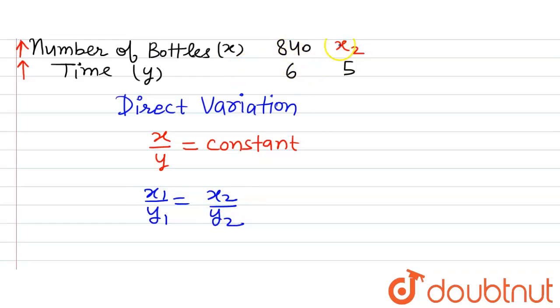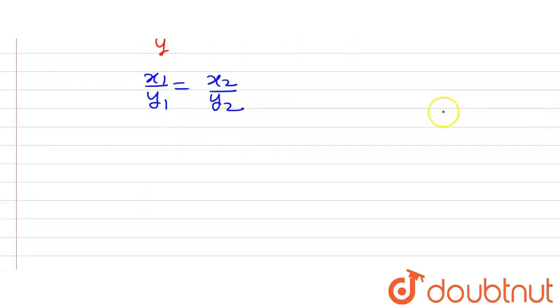y1 is 6, x2 is supposed to be found out, and y2 is 5, which we are going to find out now.